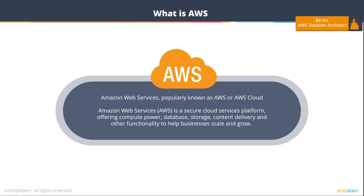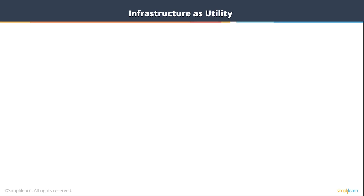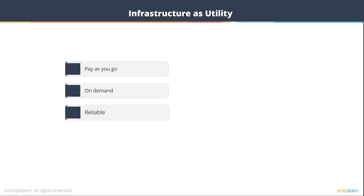Amazon Web Services, popularly known as AWS or AWS Cloud, is essentially a secure cloud service platform that offers compute power, database, storage, content delivery, and a whole lot of other functionality to help businesses scale and grow.